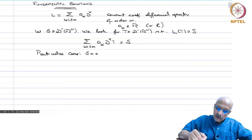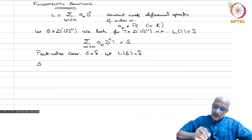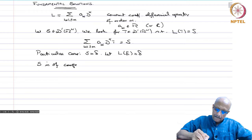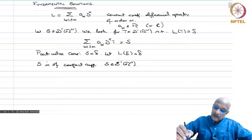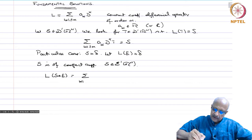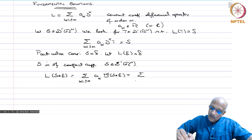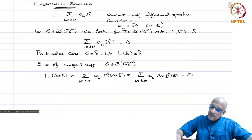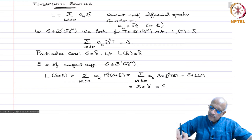A particular case is s = δ. Let us say L(e) = δ. Suppose s is of compact support, meaning s belongs to E′(ℝⁿ). Then let us look at s ∗ e. We have L(s ∗ e) = Σ_{|α|≤m} a_α D^α(s ∗ e) = Σ_{|α|≤m} a_α (s ∗ D^α e) = s ∗ L(e) = s ∗ δ = s.